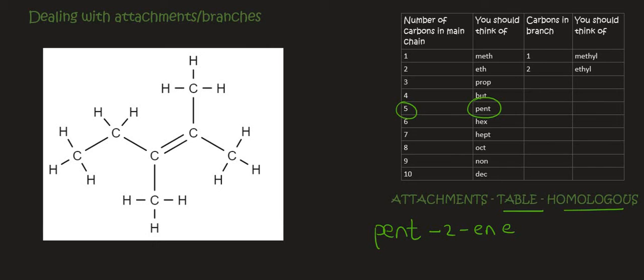Now we can look at the attachments. So we've got an attachment here, and we have an attachment here. Each of those attachments have one carbon. So that's a methyl. So we can write the word methyl over here. Then that's taking place on carbon number two and three. So we can say two, three, and then dimethyl.